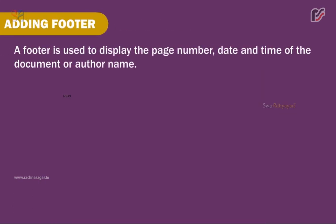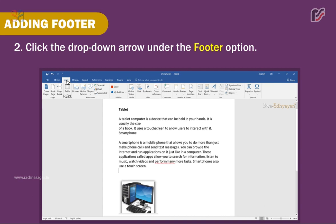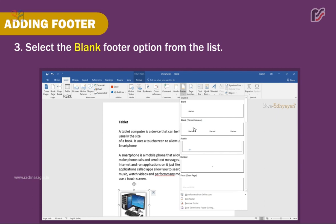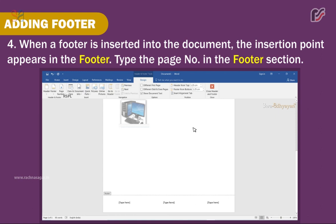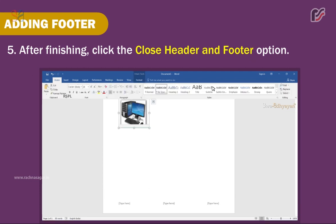Adding a Footer. A footer is used to display the page number, date and time, or author name of a document. Steps to insert a footer: 1. Select the Insert tab. 2. Click the drop-down arrow under the Footer option. 3. Select the blank footer option from the list. 4. When the footer is inserted, the insertion point appears in the footer — type the page number in the footer section. 5. After finishing, click the Close Header and Footer option.